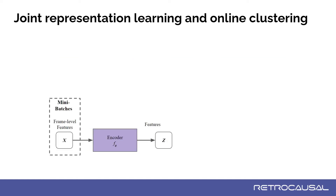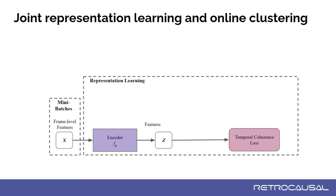For each training iteration, we first sample a small batch of frame-level features and pass them through a two-layer encoder network to extract the embedded features Z. We then apply a temporal coherence loss on these embedded features. The loss encourages temporally coherent representations — neighboring video frames get mapped to nearby points in the embedding space, and temporally distant frames are pushed far away from each other.